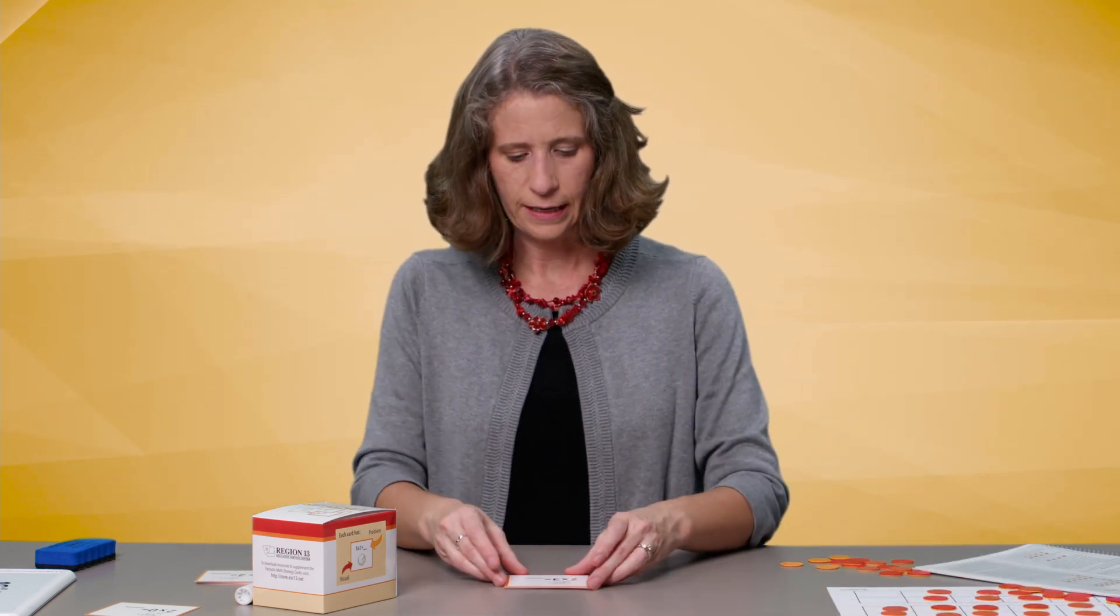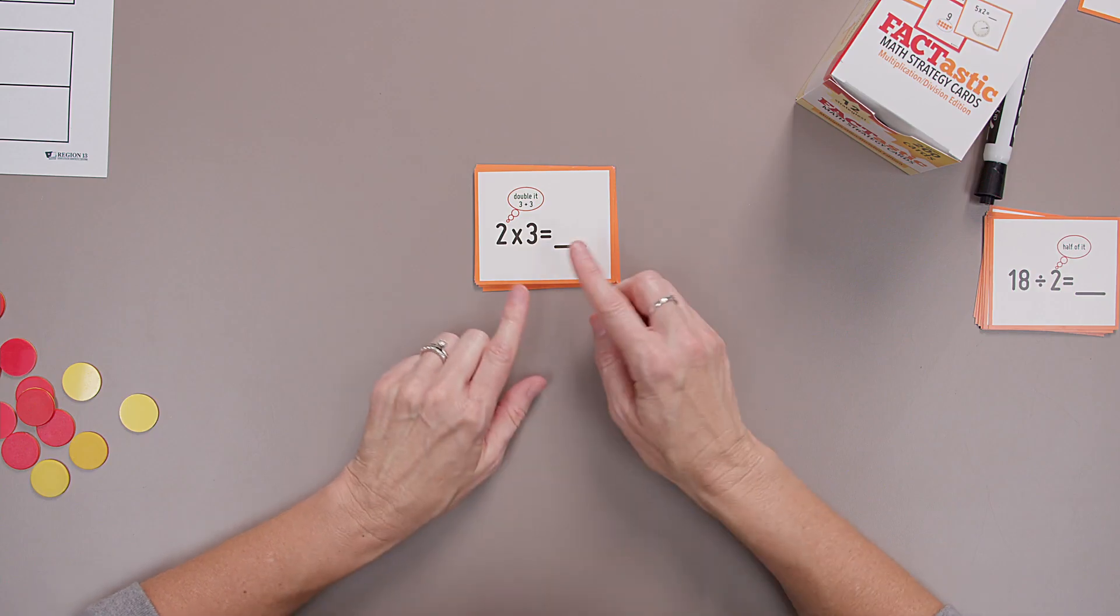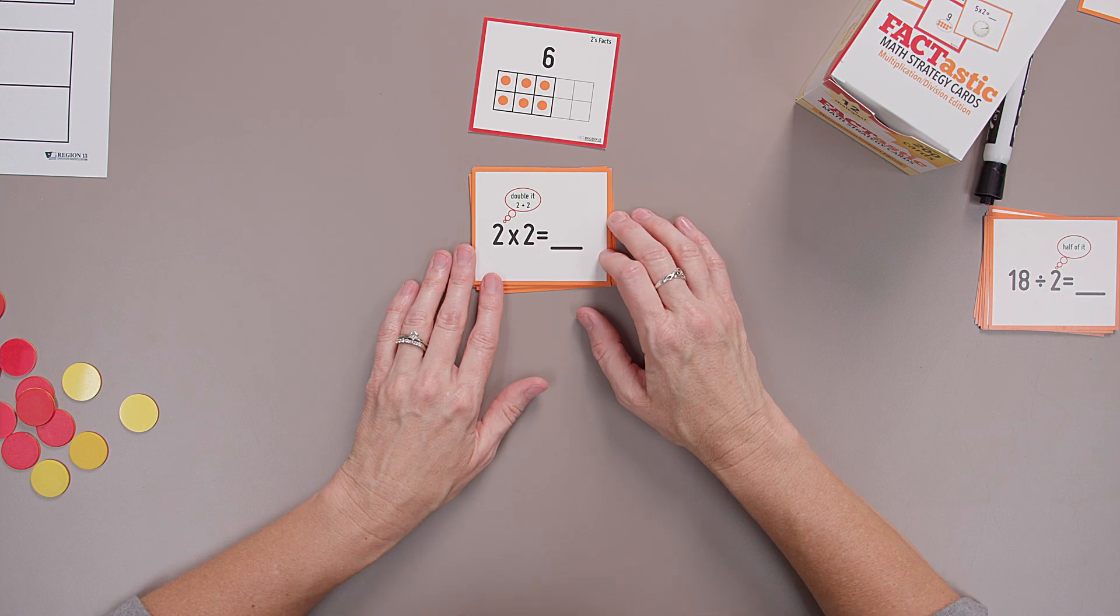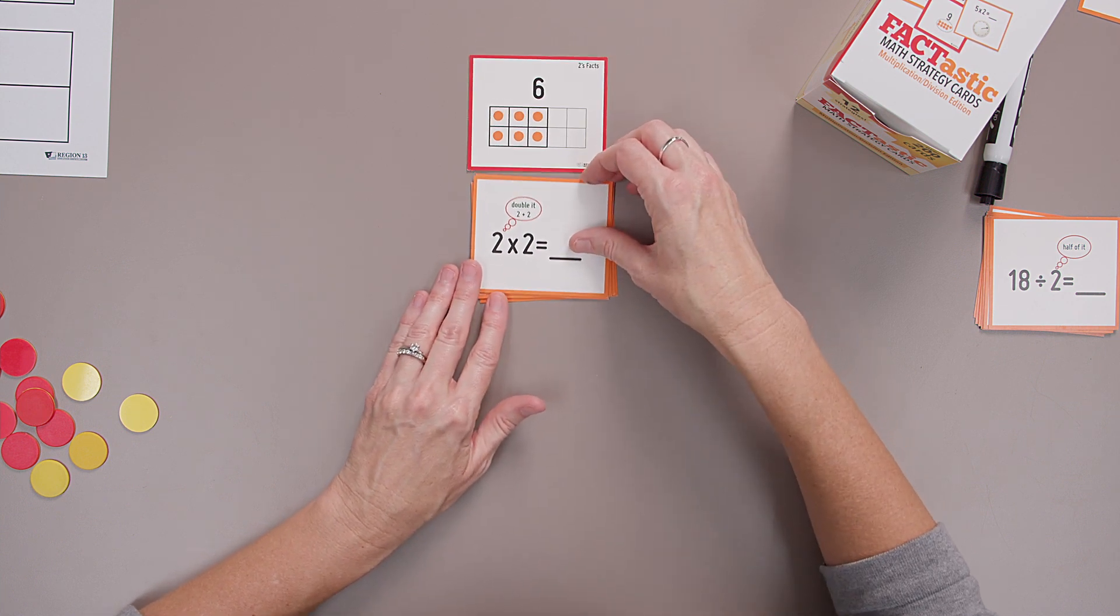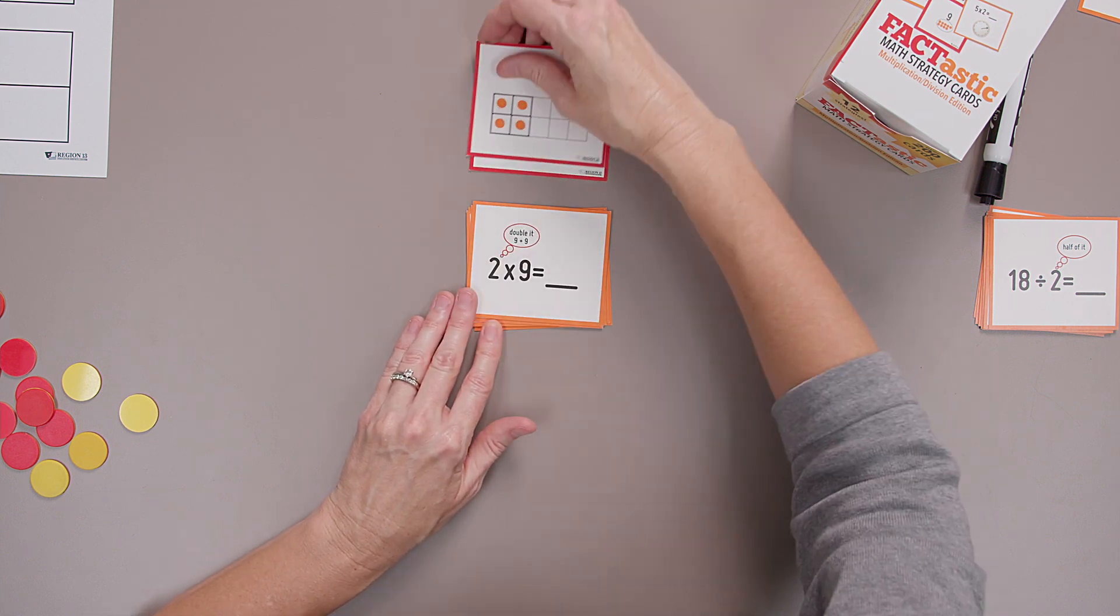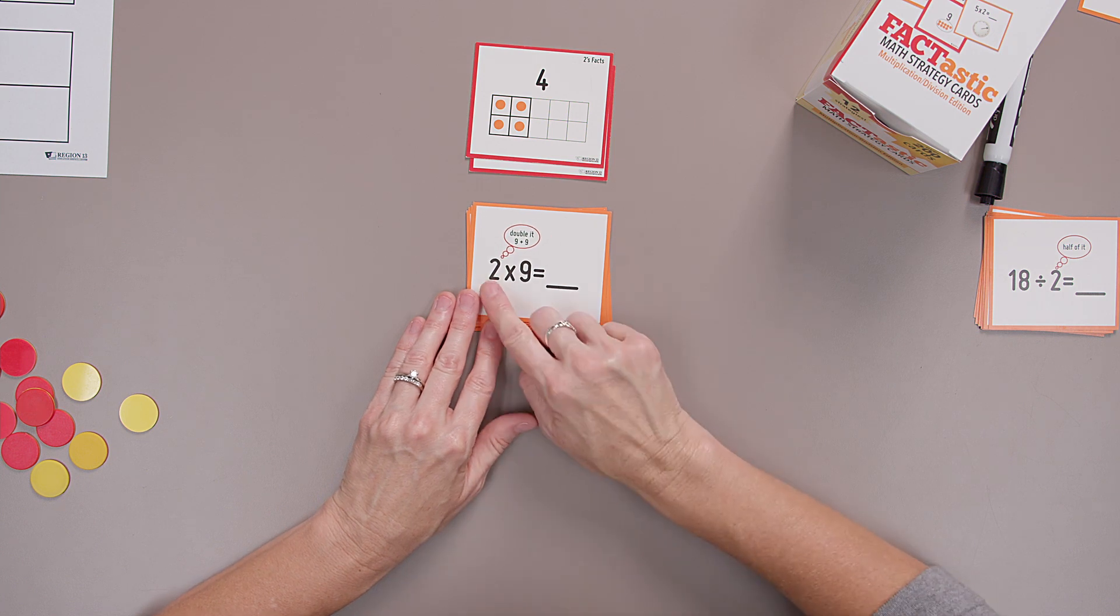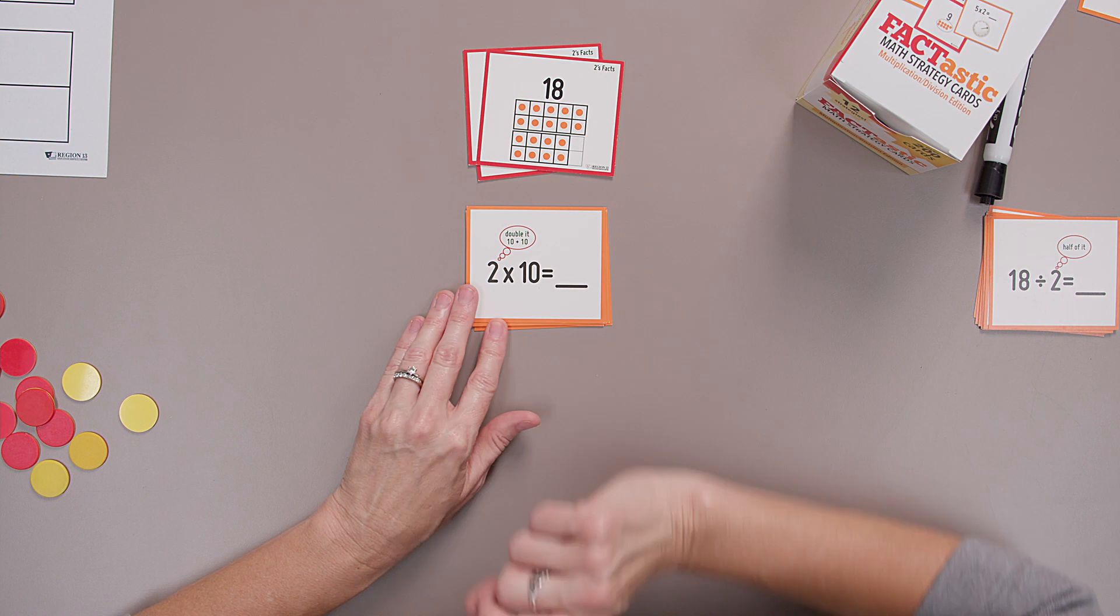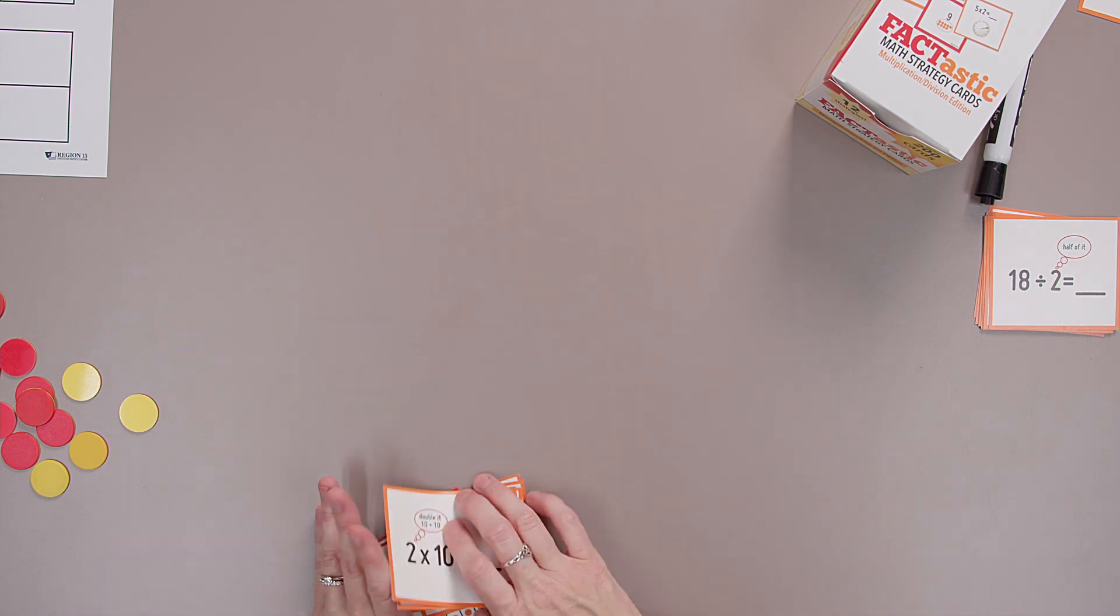All right, mathematicians, let's do a little practice together. Put that out of the way and look at our fact-tastic cards. Two times three, double three is six. Two times two, double two, four. Two times nine, double nine, eighteen.